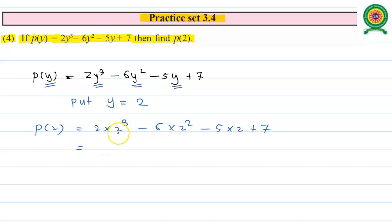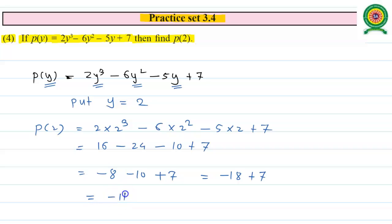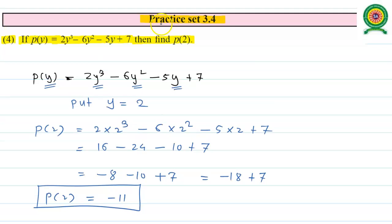Simplifying: 2³ is 8, so 2 times 8 is 16; 2² is 4, so 6 times 4 is 24; 5 times 2 is 10; plus 7. So 16 minus 24 gives -8, minus 8 minus 10 gives -18, and -18 plus 7 gives -11. Therefore the value of P(2) is -11. That completes Practice Set 3.4. Thank you.